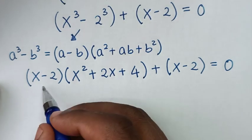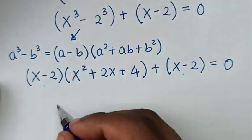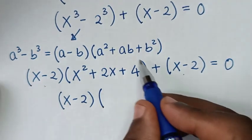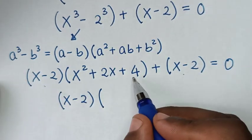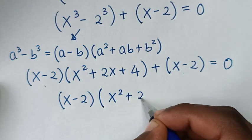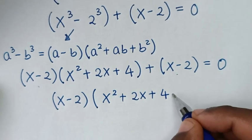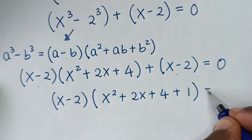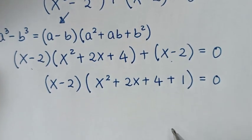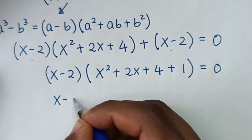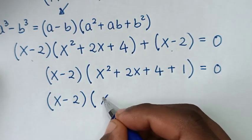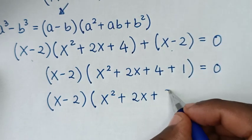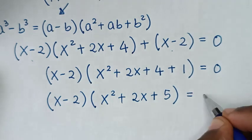Then in the next step, x minus 2 is common, so we factor it out. Dividing through by x minus 2 gives x squared plus 2x plus 4, then plus 1. So it becomes x minus 2, times x squared plus 2x plus 5, is equal to 0.